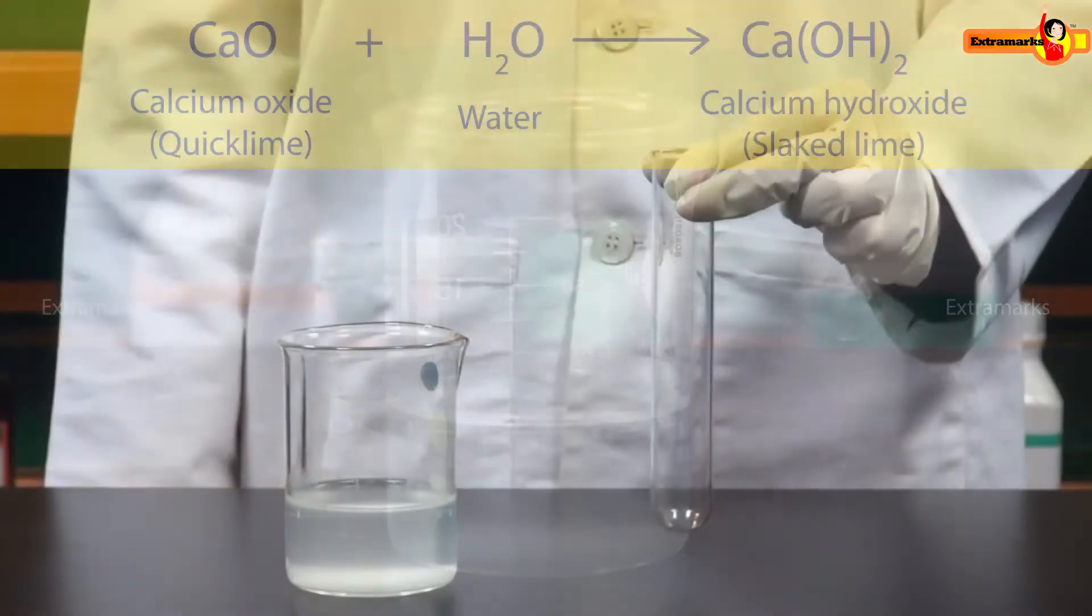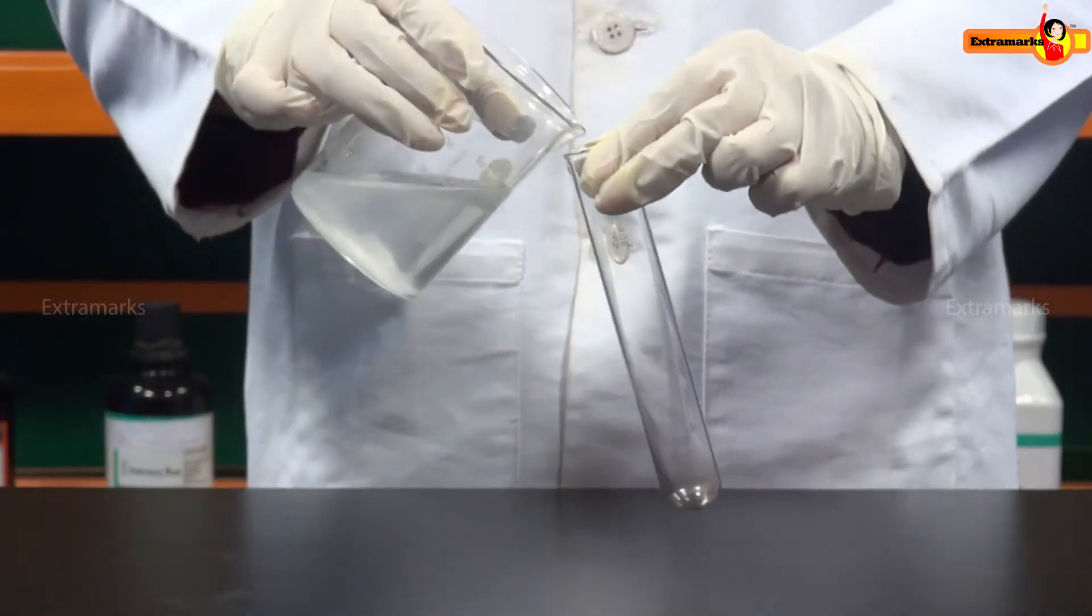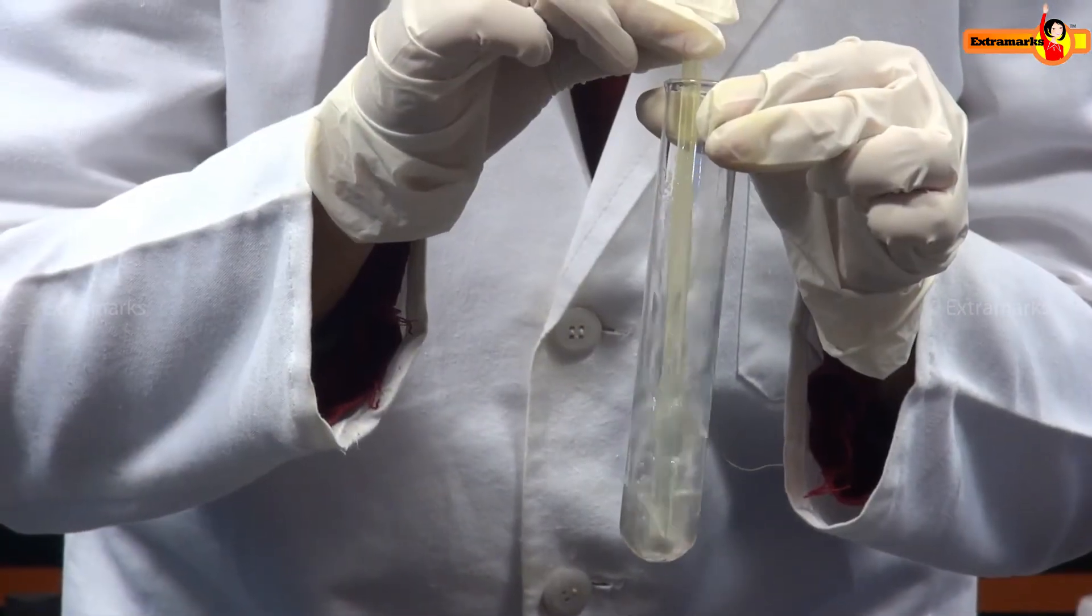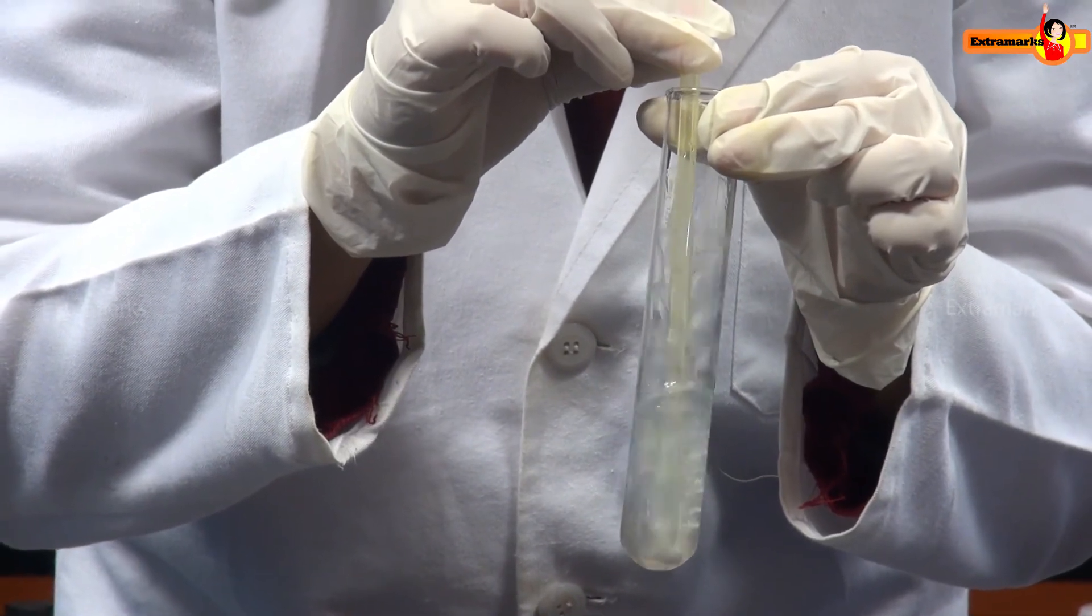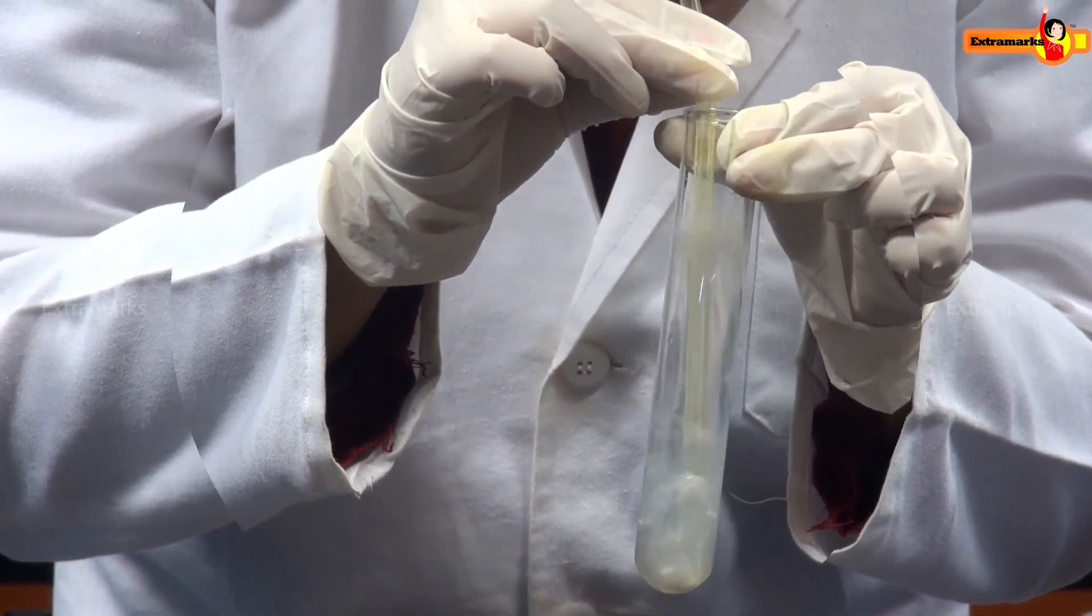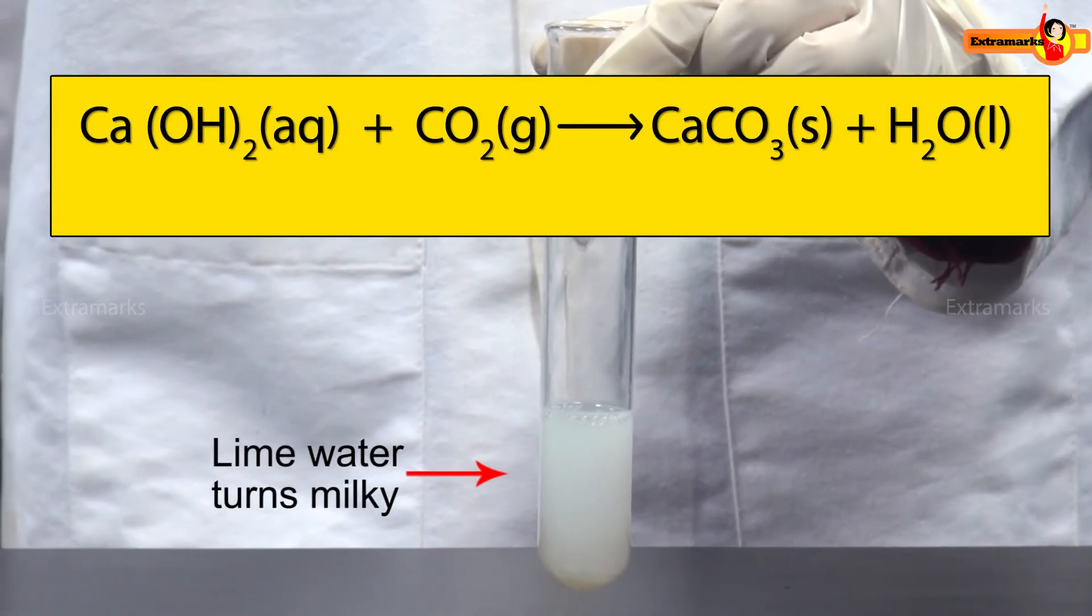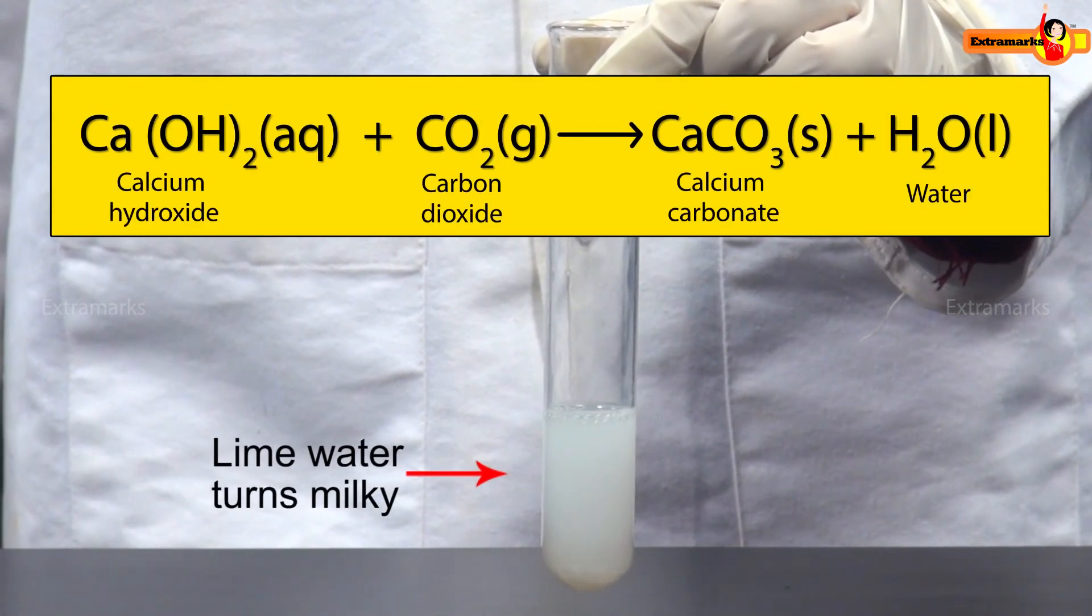Now, take small amount of clear solution of lime water from the beaker into a test tube. Blow the exhaled air into the test tube containing lime water and observe. Notice, the lime water turns milky due to the formation of insoluble calcium carbonate.